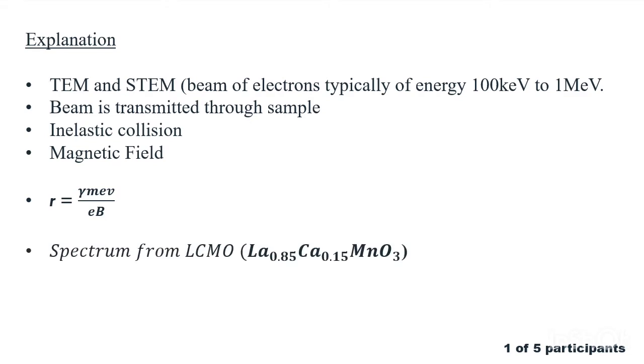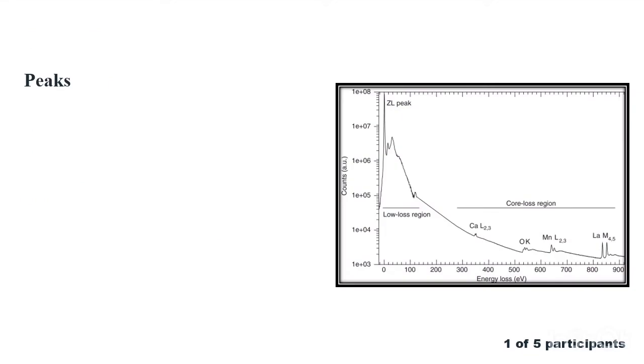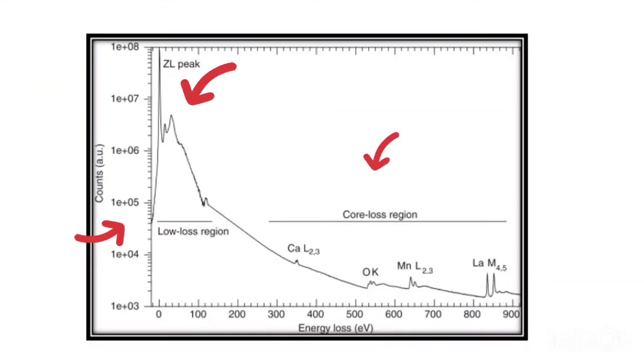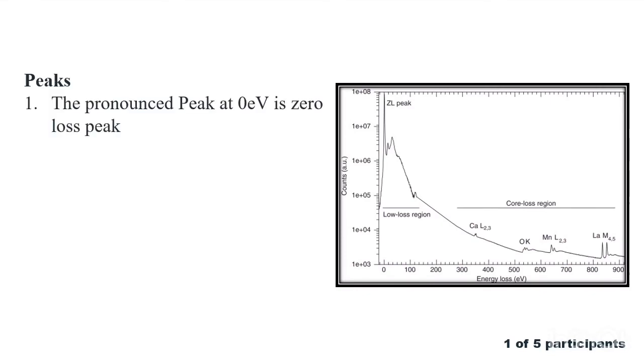I'm going to show a spectrum from LCMO, which is a thin sample as shown in the diagram. The spectrum is divided into low loss or core loss region and the zero loss peak and core loss excitation edges. The pronounced peak at zero electron volt is labeled as zero loss peak. The loss of energy depends upon the type of gun used. Smaller energy spreads are possible by using monochromators.